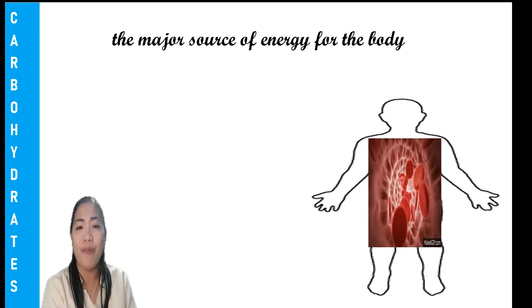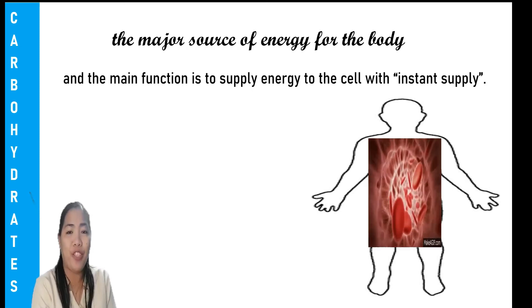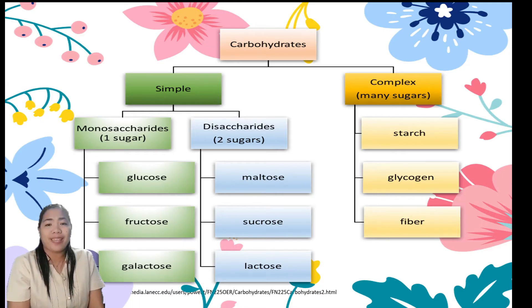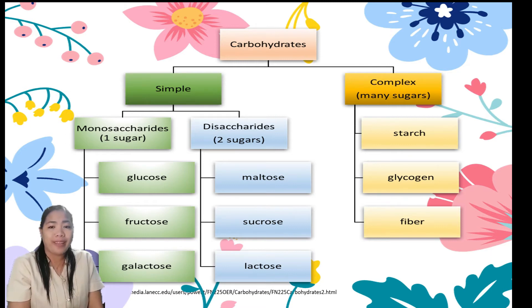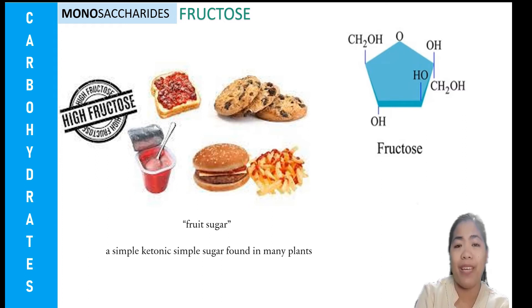Carbohydrates are the major source of energy for the body. Their main function is to supply energy to the cell with instant supply. All carbohydrates contain carbon, hydrogen, and oxygen. Carbohydrates are divided into two types: simple and complex. Under simple carbohydrates we have monosaccharides and disaccharides, while for complex we have polysaccharides. Fructose is also known as fruit sugar — it is a simple sugar found in many plants. This is the structure of fructose.